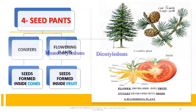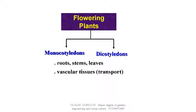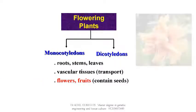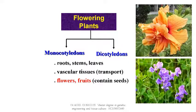Flowering plants are subdivided into two main divisions: monocotyledons and dicotyledons. Both have roots, stems, and leaves. They contain vascular tissues for transport and support. They produce flowers, fruits, and seeds.